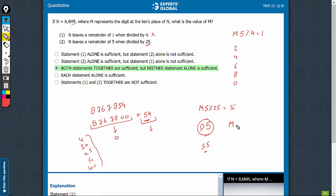So M can have two different values, 0 and 5. Therefore, statement 2 is also not sufficient.